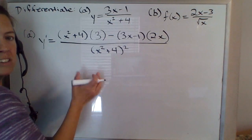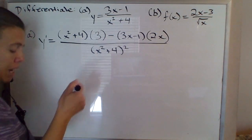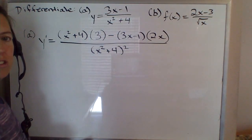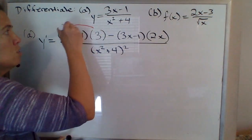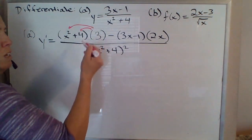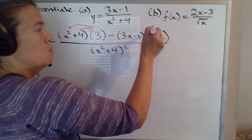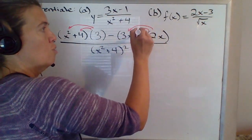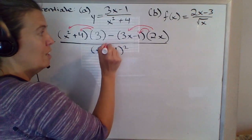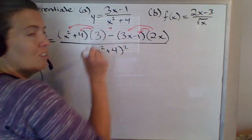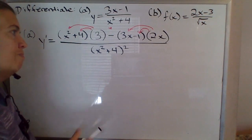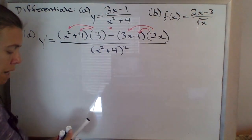So now we want to simplify this. Mainly what needs to be done is to distribute — distribute the 3 over that x squared plus 4, distribute the 2x over the 3x minus 1, and also distribute the negative here. I'll put a little asterisk above that so we don't forget, and combine like terms.